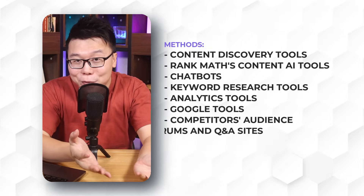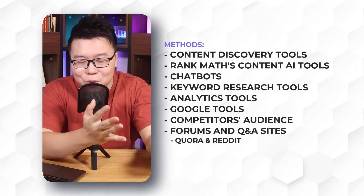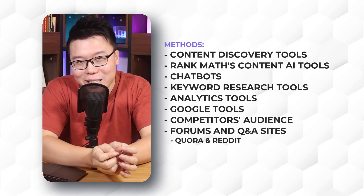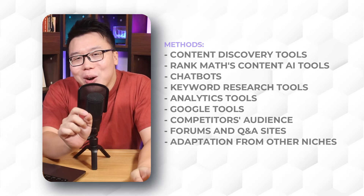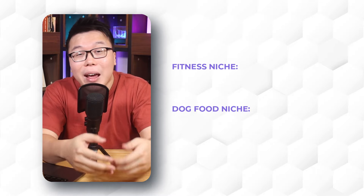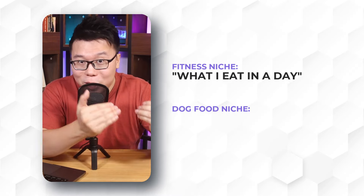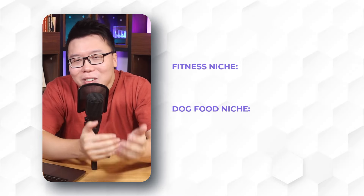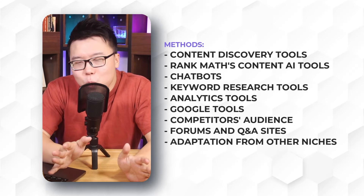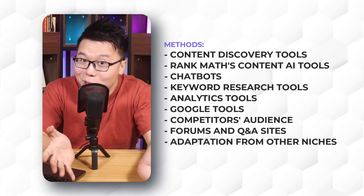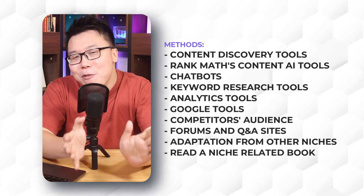Other ways to find content ideas include visiting forums and Q&A sites like Quora and Reddit. Read through the questions and responses people have related to topics of your niche and you will find highly relevant content ideas. Another way is through adaptation of other niches or industries. For example, if you are in the dog food niche and there is a popular trend where fitness enthusiasts showcase 'what I eat in a day' type of content, you can use the same concept and apply it to your niche — such as 'what my dog eats in a day.' And if there is a trend about meal preps, you will have content ideas about meal preps for dogs. There is no set route to find content ideas. The key is to test things out and see if it works. Finally, pick up a book related to your niche and start reading — you will find a wealth of content ideas.